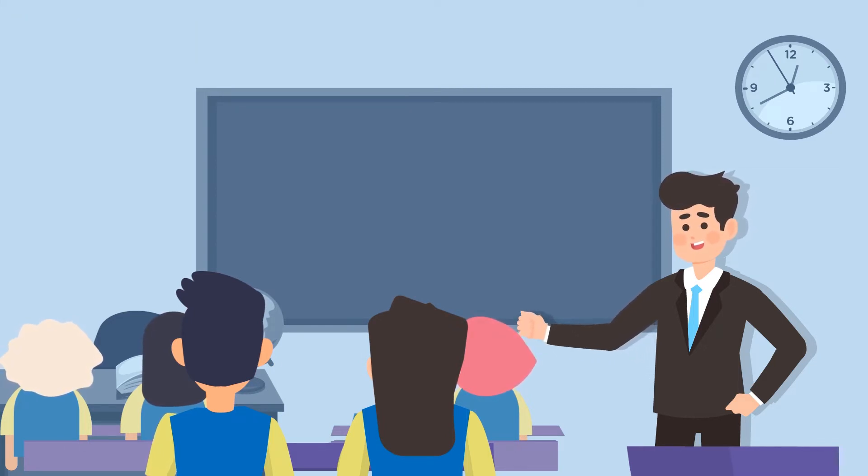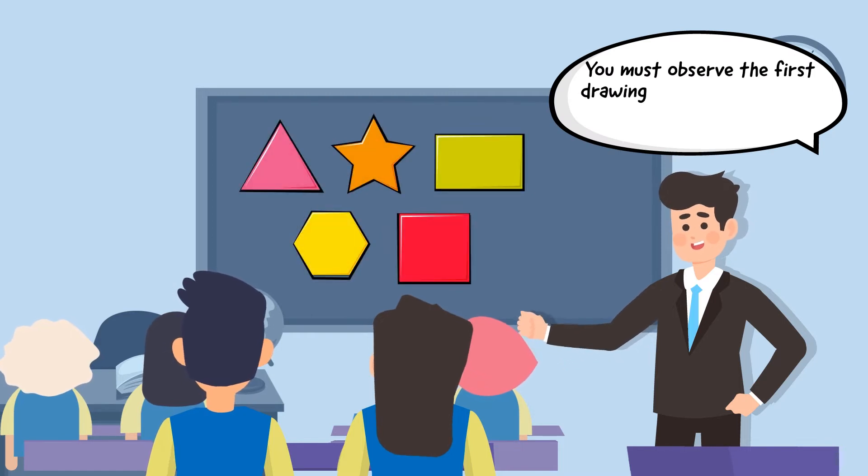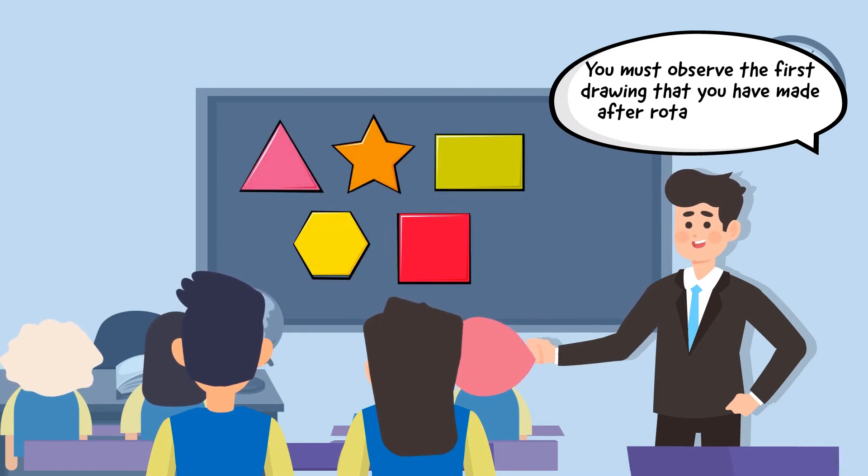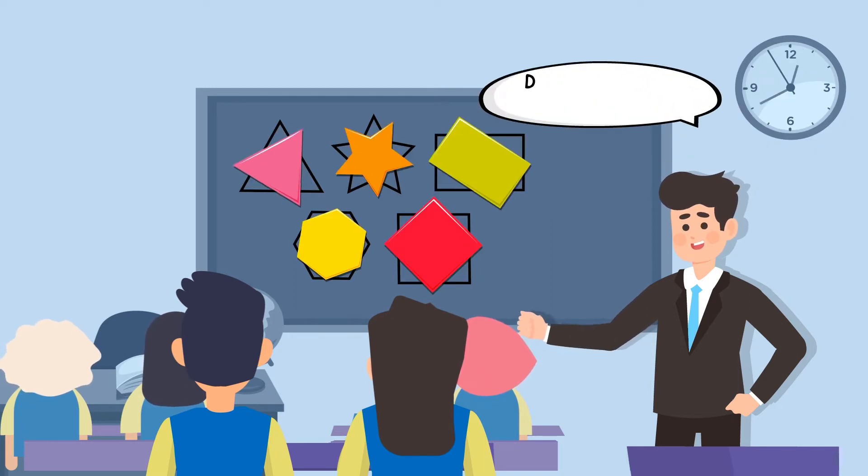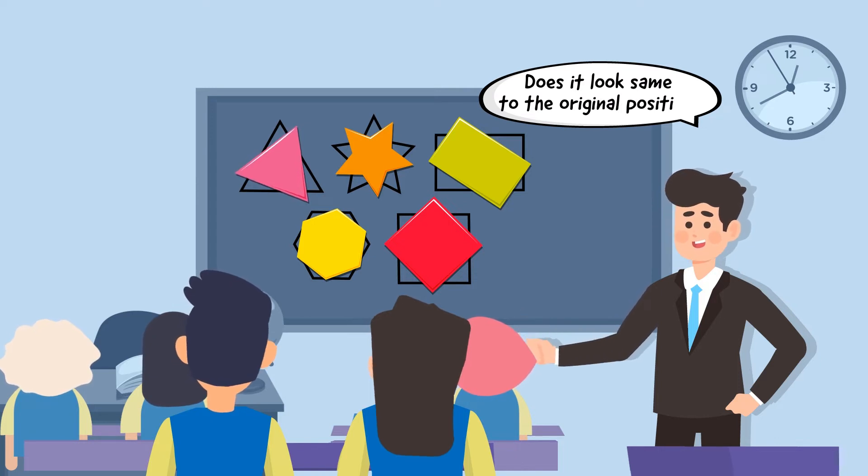Inform each group that they must observe the first drawing that they made after rotating the shape by one-third of a turn and ask them if the drawing looks similar to that of the shape in its original position.